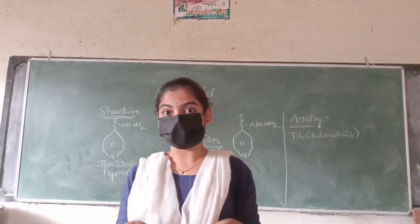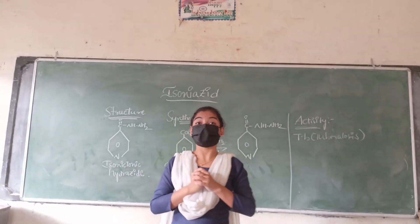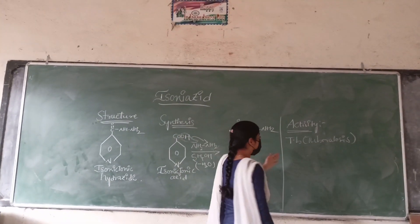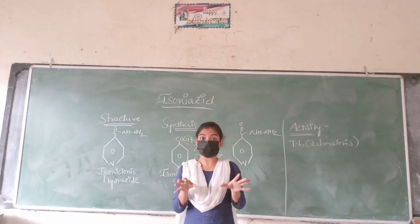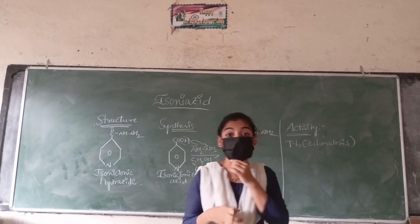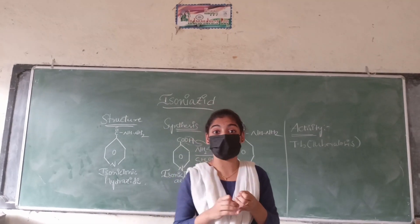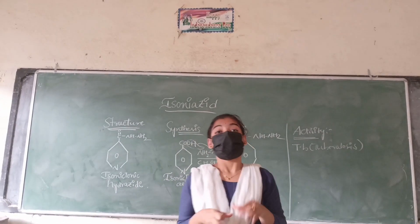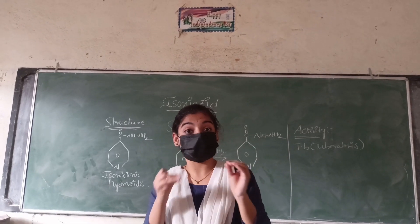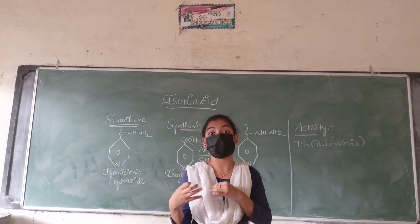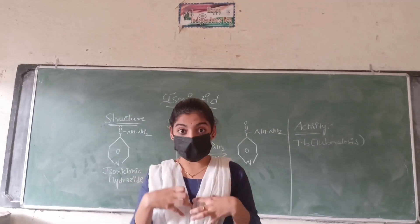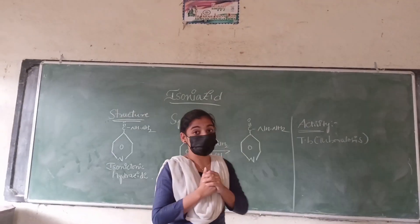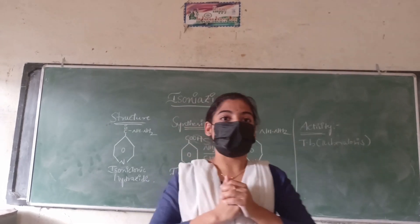The use of this drug is, it is mainly used for the treatment of tuberculosis disease, that is TB. And this is a very cheap drug. It is available in many forms such as tablets, injections, syrups, and so on. More than 50% of this drug is excreted through urine after we administer this drug. This is all about the synthesis and therapeutic activity of the drug.